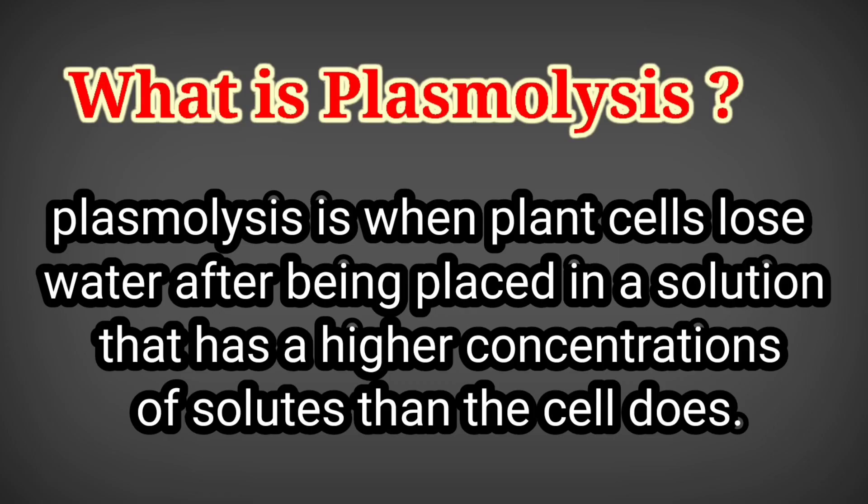Plasmolysis is when plant cells lose water after being placed in a solution that has a higher concentration of solutes than the cell does. When cells are kept in a hypertonic solution, cells become flaccid, because the water in the protoplasm and vacuoles moves out due to osmosis and the protoplasm shrinks. Plasmolysis occurs when water moves out of the cell and the cell membrane of a plant cell shrinks away from its cell wall.